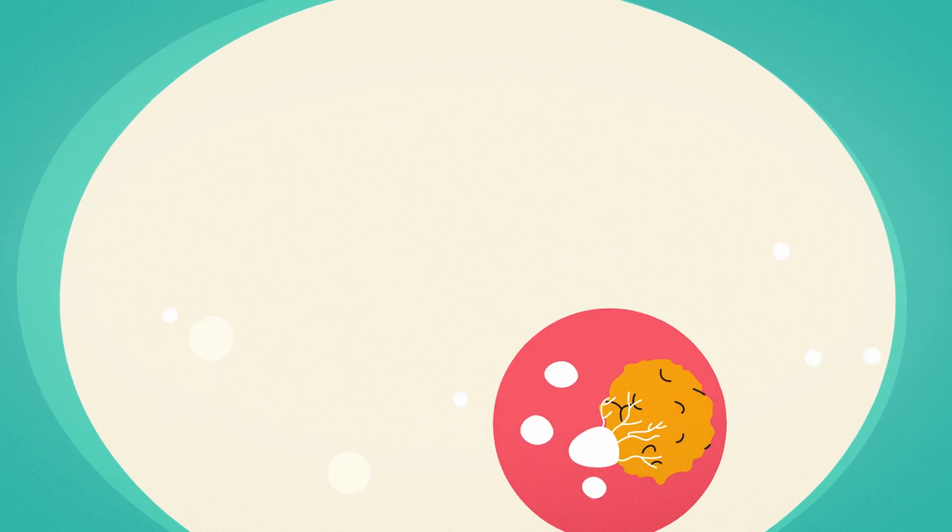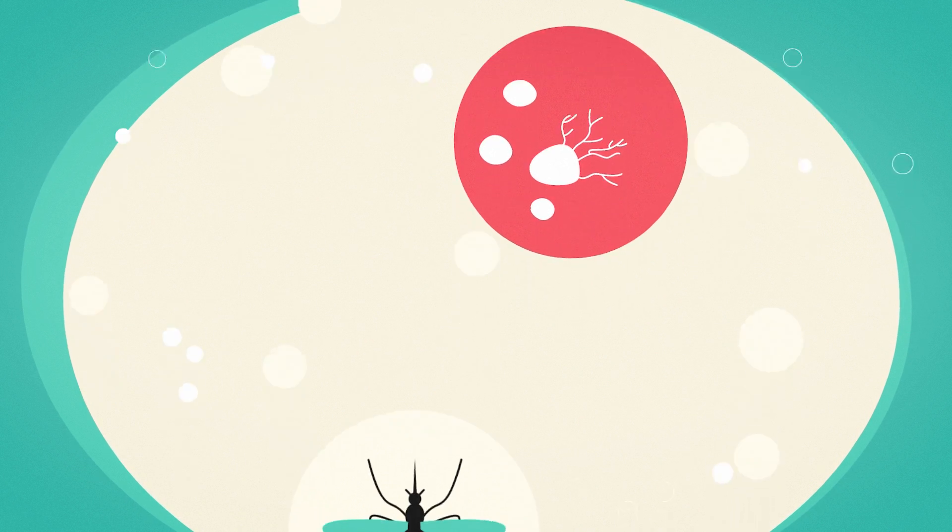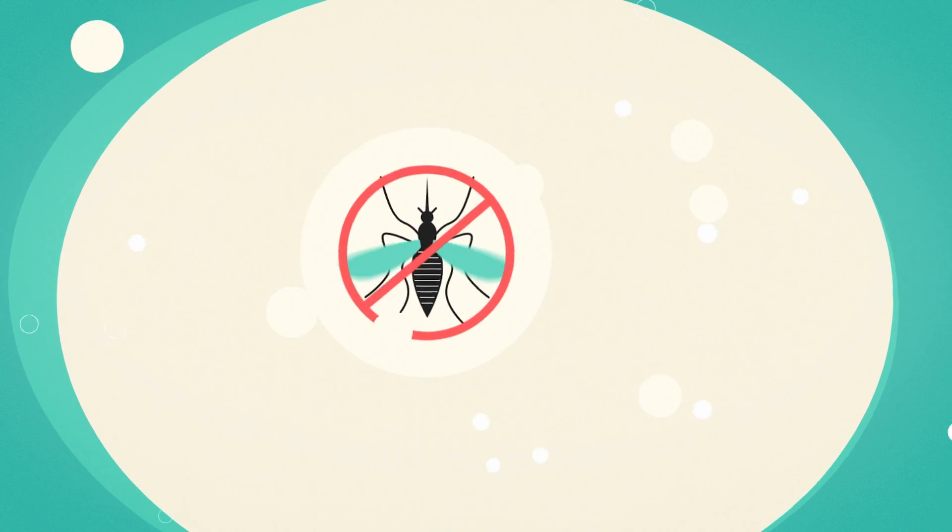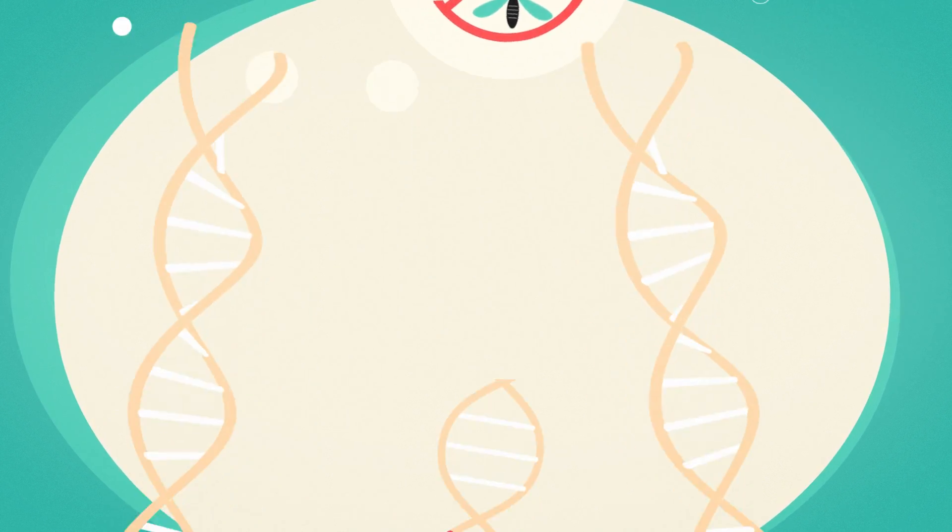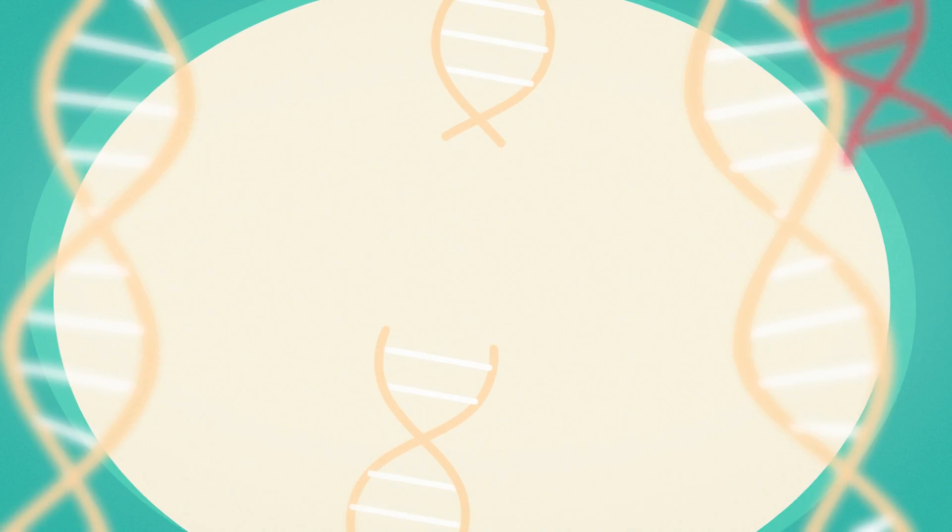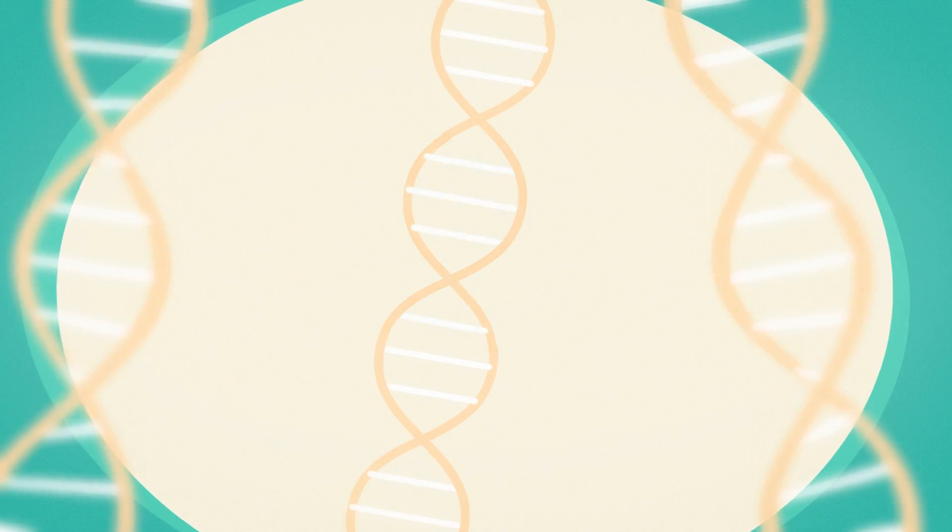Scientists can edit white blood cells to train them to attack cancer cells, create malaria-free mosquitoes, or give crops a fighting chance against pests. It's even possible to swap in a new sequence to replace the knocked out gene.